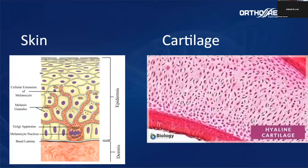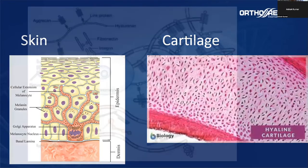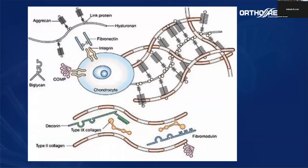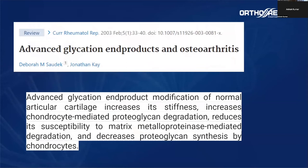We have to keep in mind that the skin tissue has a turnover of 28 days — so in one month, we will have all new cells in our skin. While in cartilage tissue, we have a turnover of many, many years. So the accumulation of these advanced glycation end products in our cartilage can be a bigger problem than accumulation in the skin, and it decreases the production of some substances in the cartilage matrix, like proteoglycans, causing changes in the structure of our hyaline cartilage.